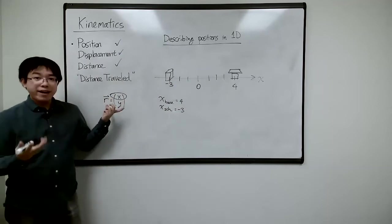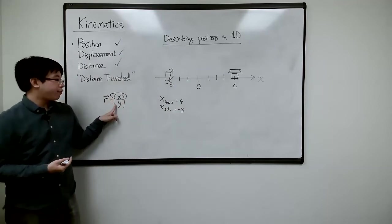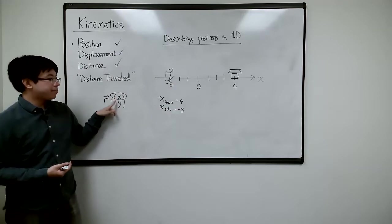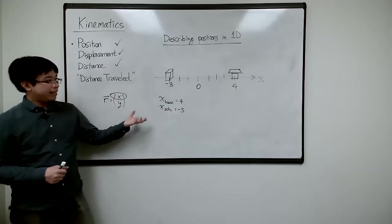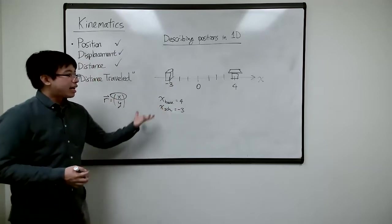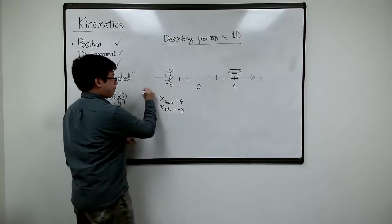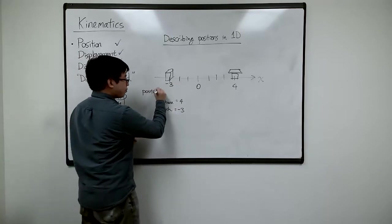So just like the coordinates of vectors, the components themselves can be negative. And yeah, so that's that. So that's describing the positions of things.